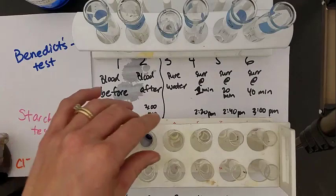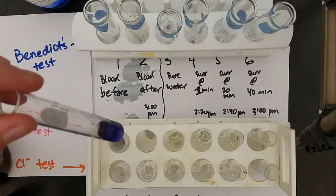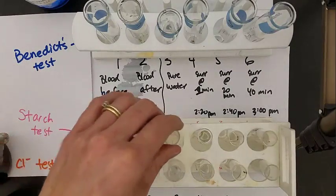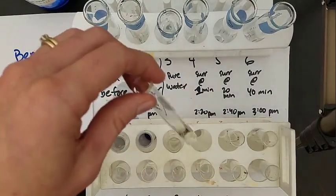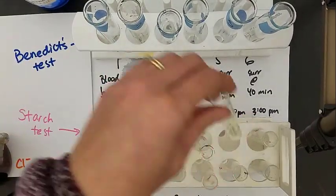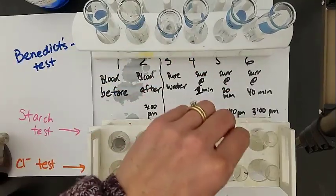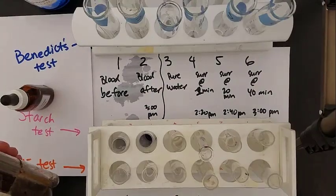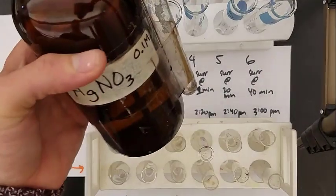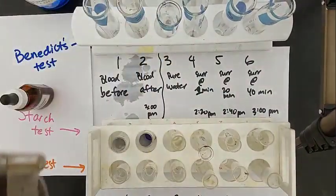Test tube one makes sense—we put starch into our blood. Test tube two shows starch remains in the blood. No starch in water, that was our control. No starch in our surroundings at any time point. The starch molecule was really big, so it makes sense that it didn't diffuse into the surroundings.